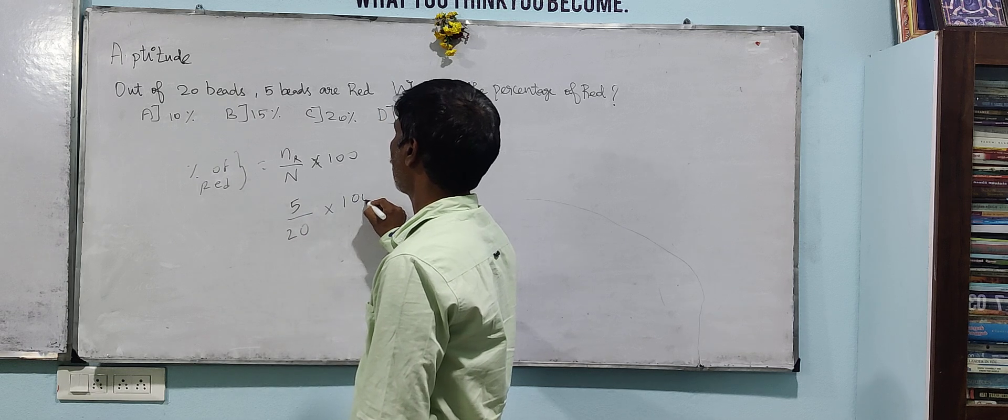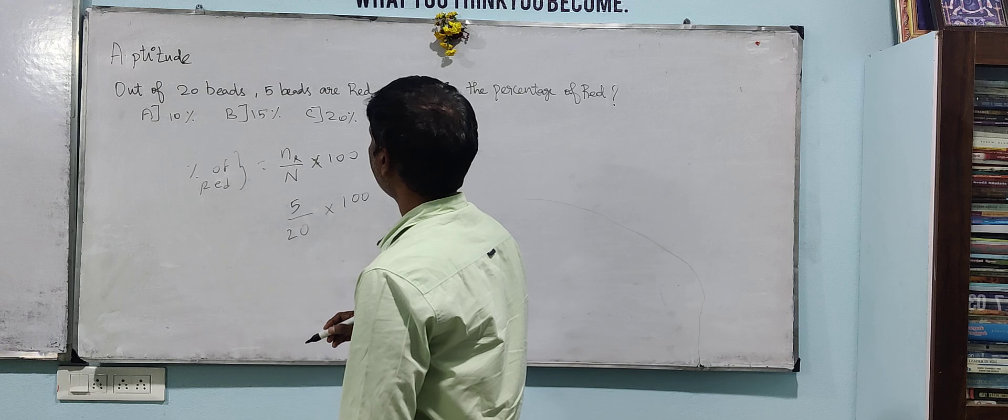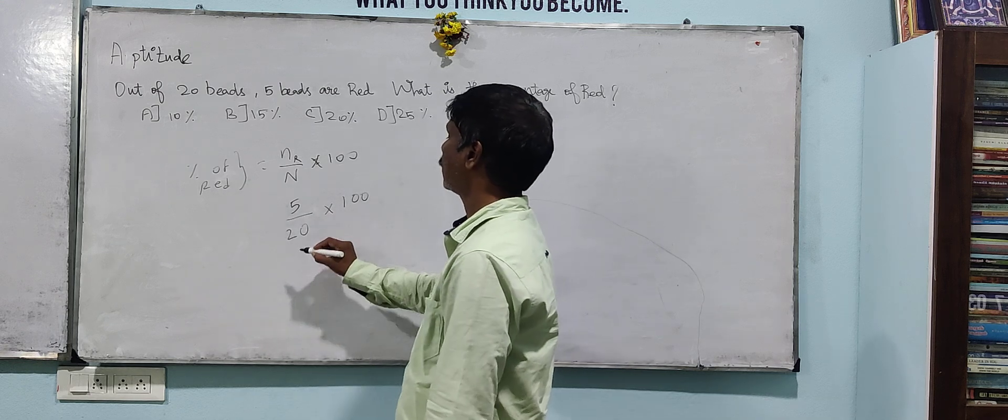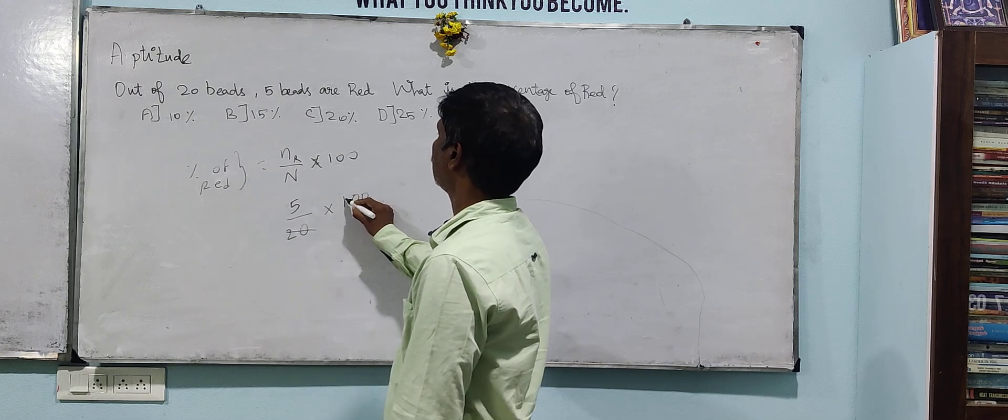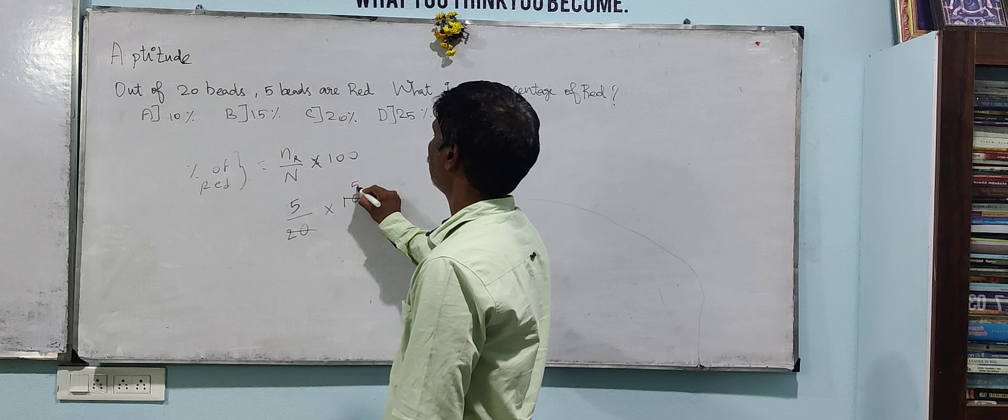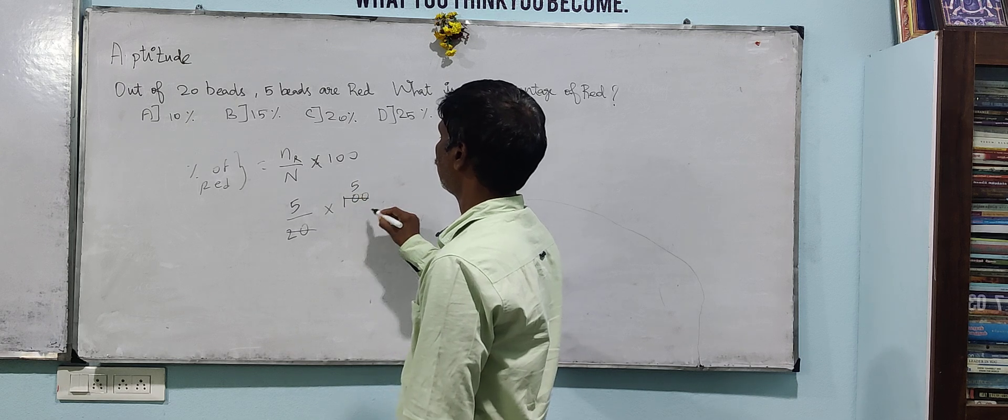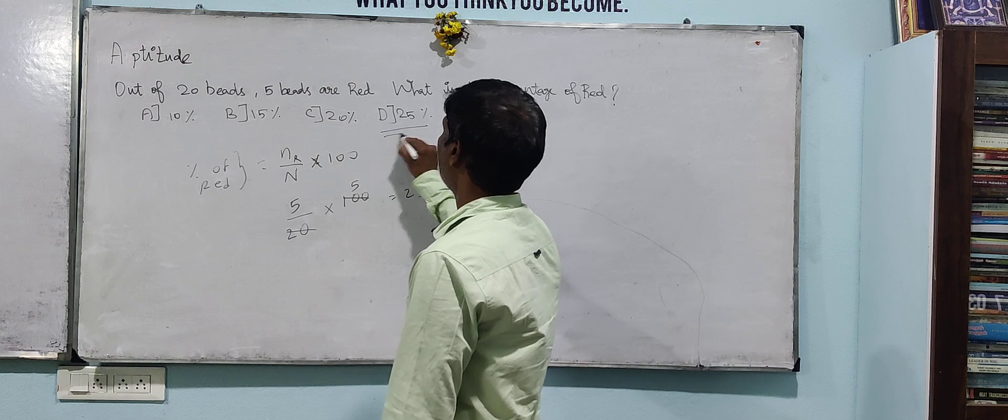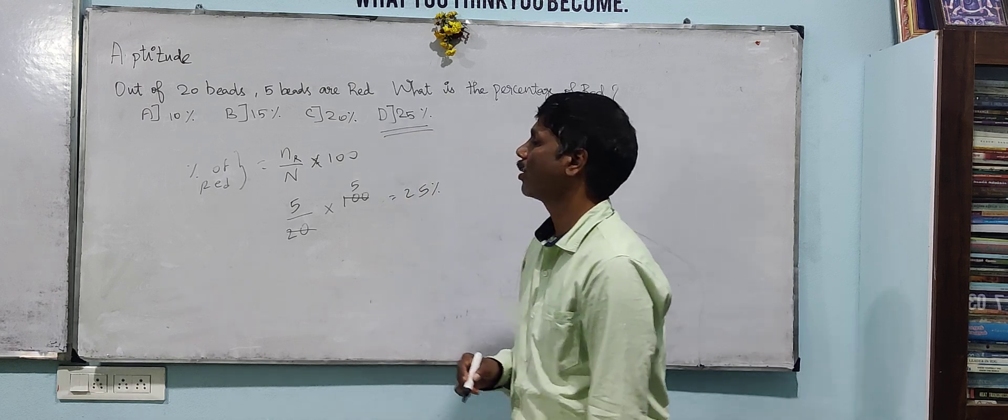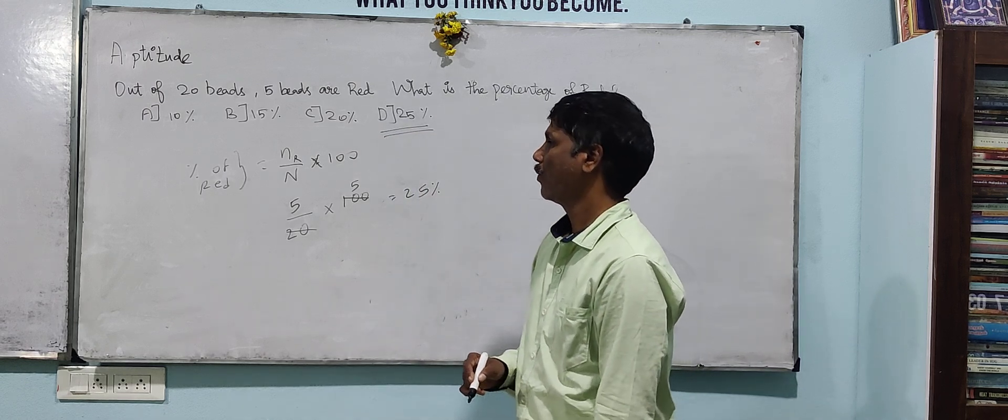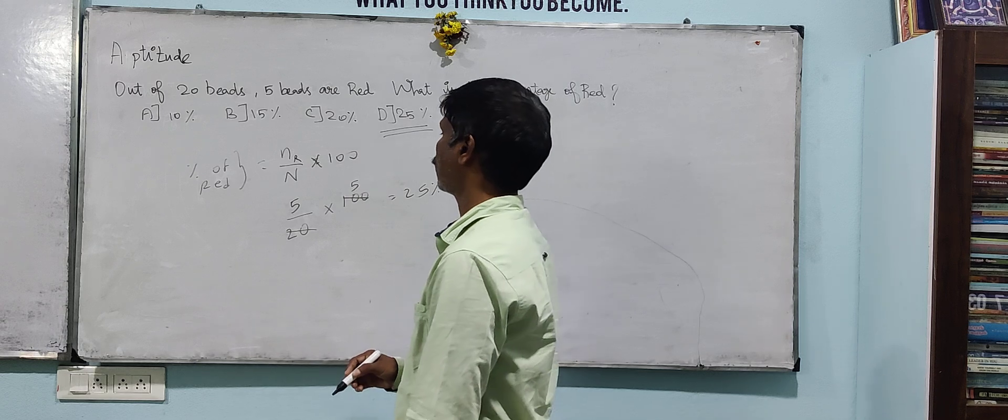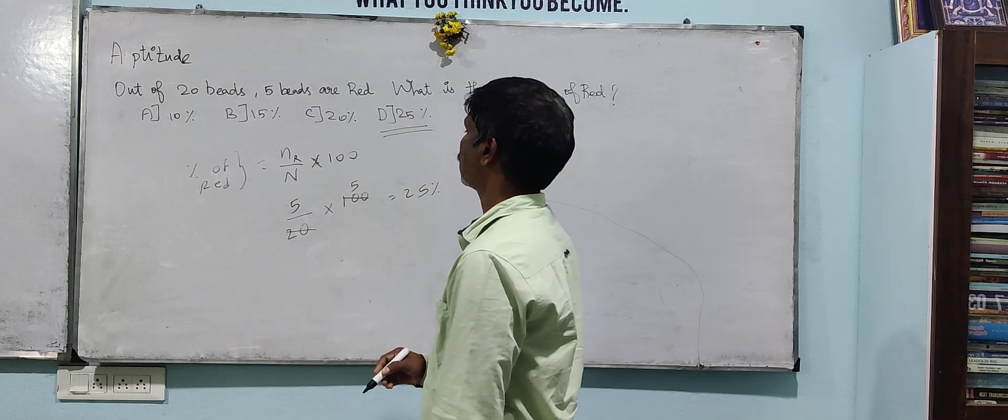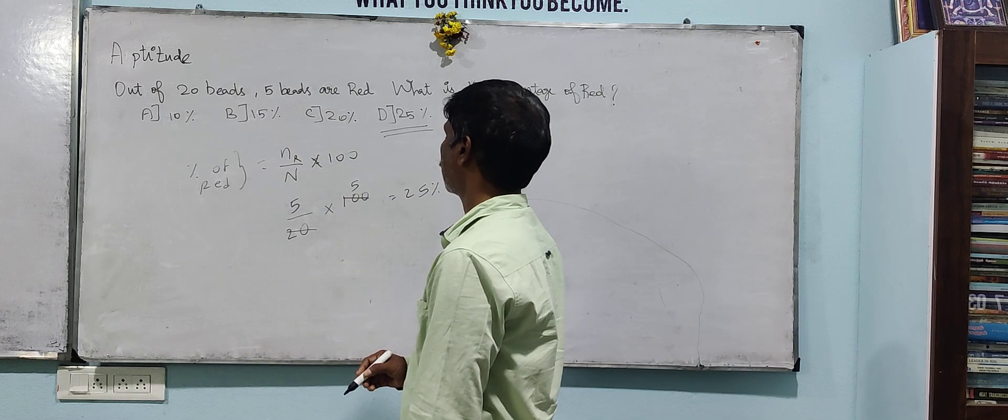So we will talk about 20 weeks and we will talk about 25 weeks. This simple sum is what is the total fraction, fraction, percentage of our average percentage.